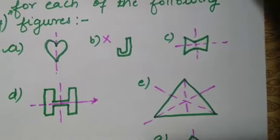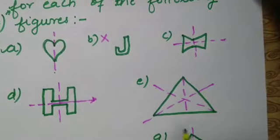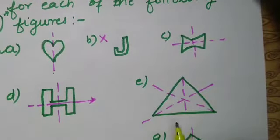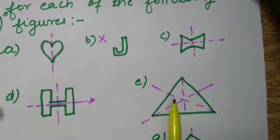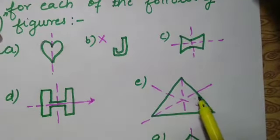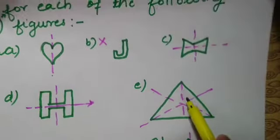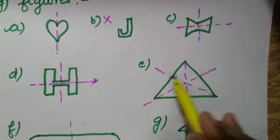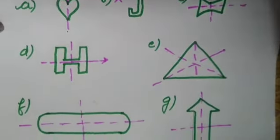An equilateral triangle is a regular polygon, as we have learned many times. Since it has three sides, the number of lines of symmetry is the same as the number of sides. So we have three lines of symmetry as drawn in this figure — from each vertex there will be one line of symmetry. This is one, two, and three. So we have three lines of symmetry in an equilateral triangle.